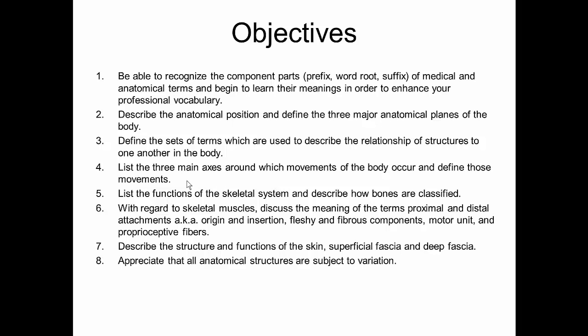List the three main axes around which movements of the body occur and define those movements. List the functions of the skeletal system and describe how bones are classified. With regard to skeletal muscles, discuss the meaning of the terms proximal and distal attachments — also known as origin and insertion — fleshy and fibrous components, motor unit, and proprioceptive fibers. Describe the structure and functions of the skin, superficial fascia, and deep fascia.